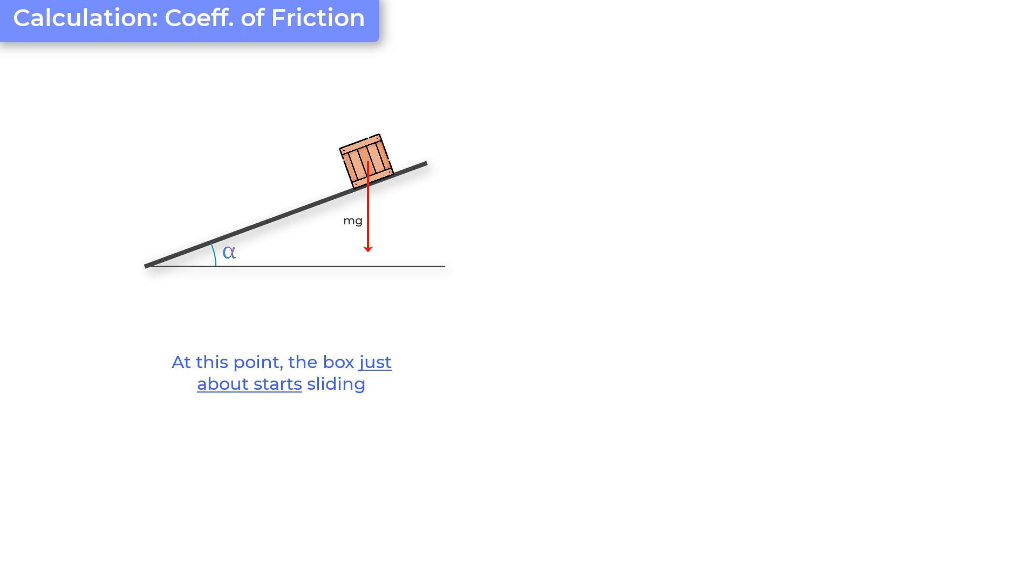Then the forces acting on the box are mg acting in the downward direction. And if you resolve mg into its components, what you will find is you will get one force in this direction and another force would be in this direction. And you know that if this is angle alpha, this would also be alpha. In which case, this force would be mg cos alpha and this force would be mg sine alpha.